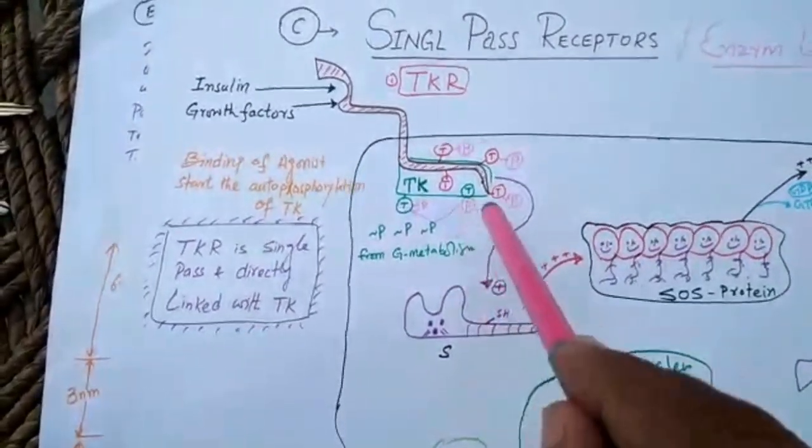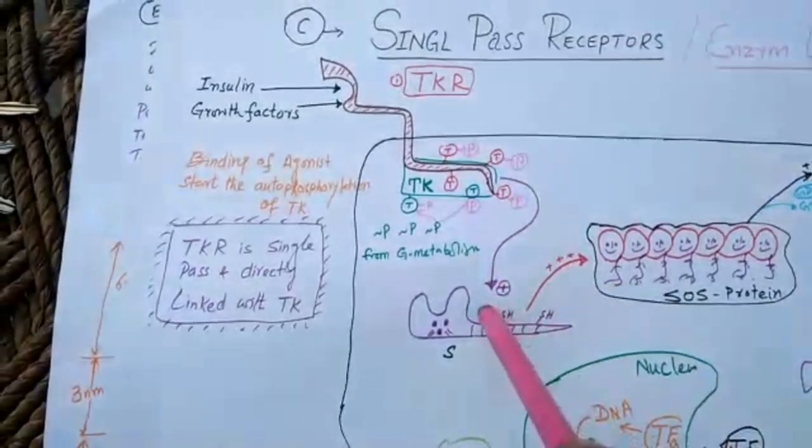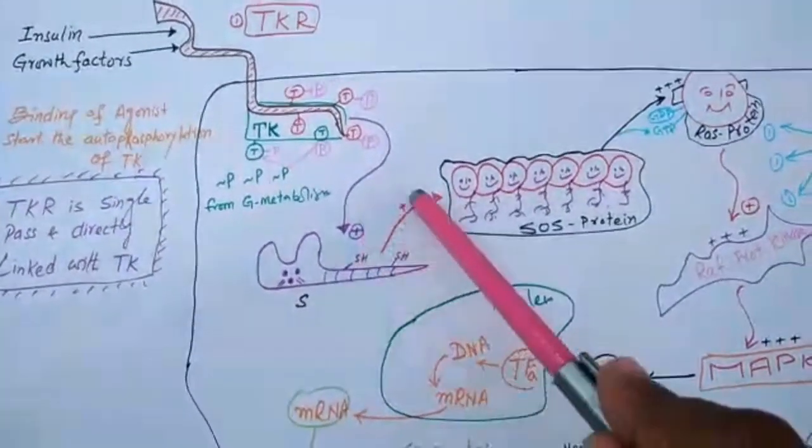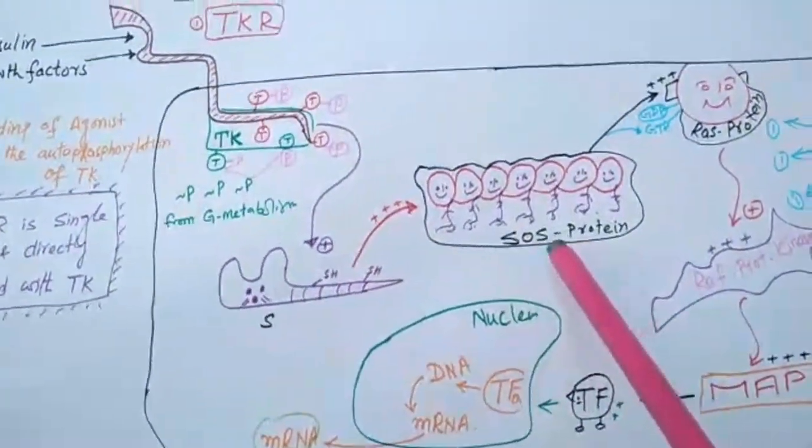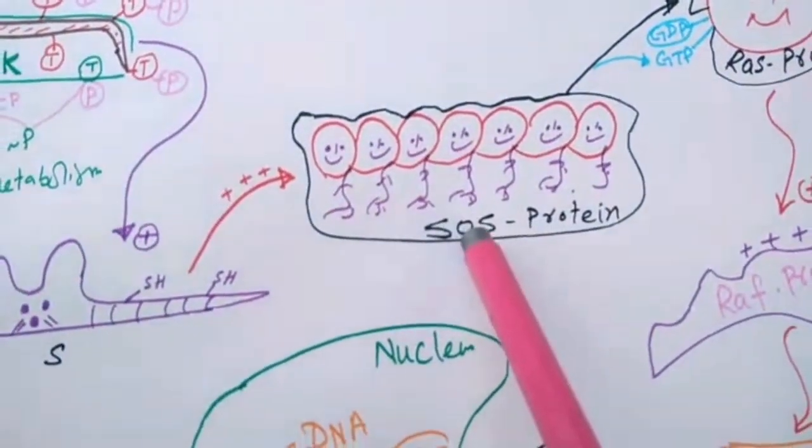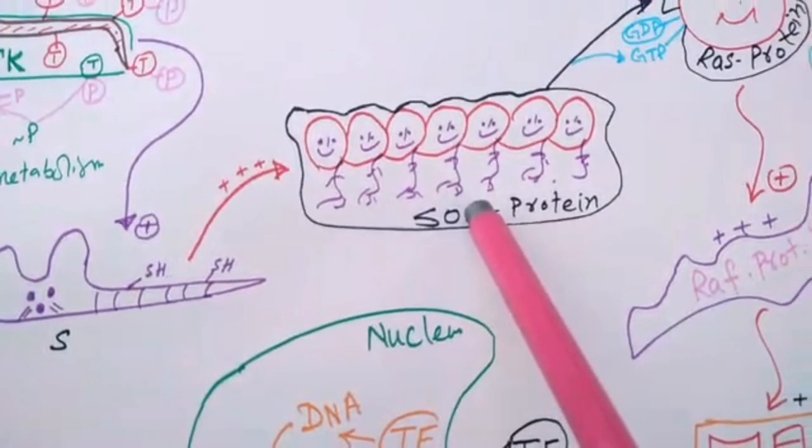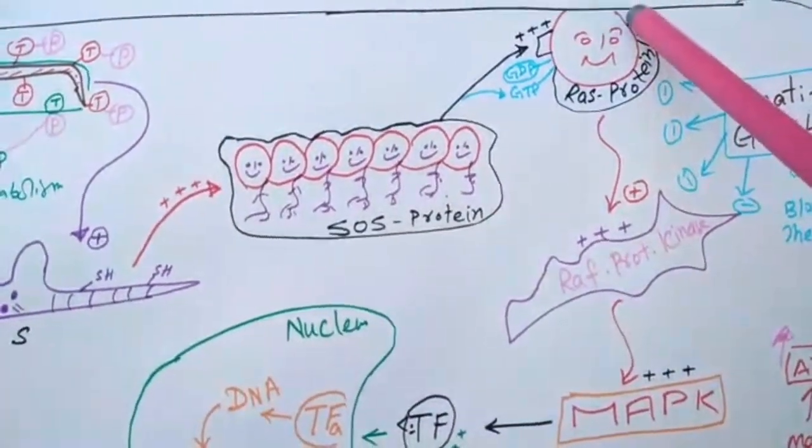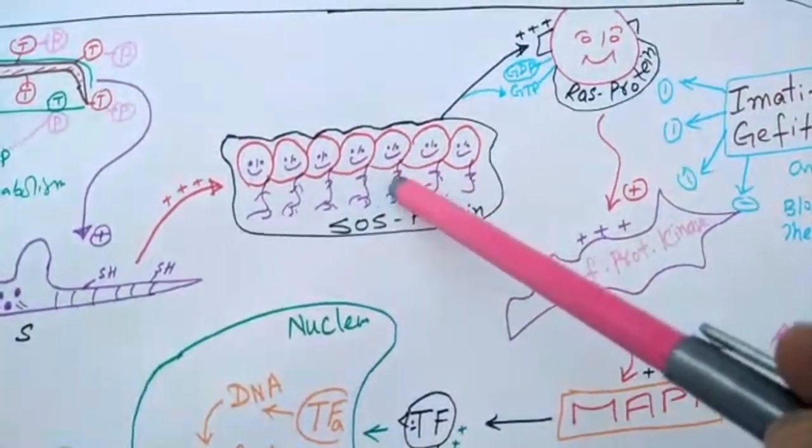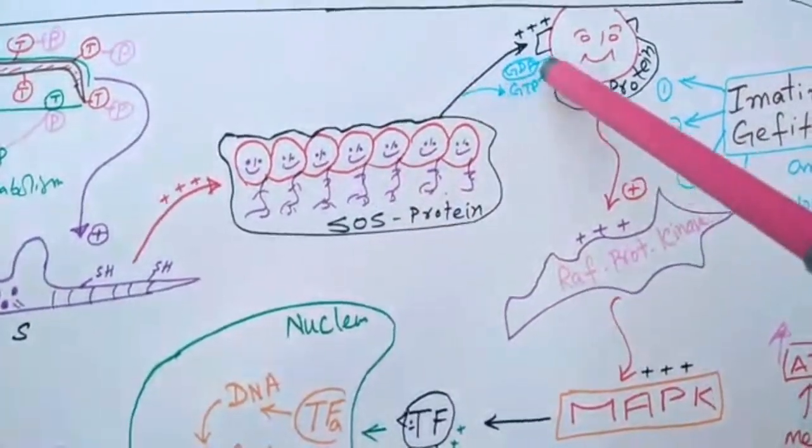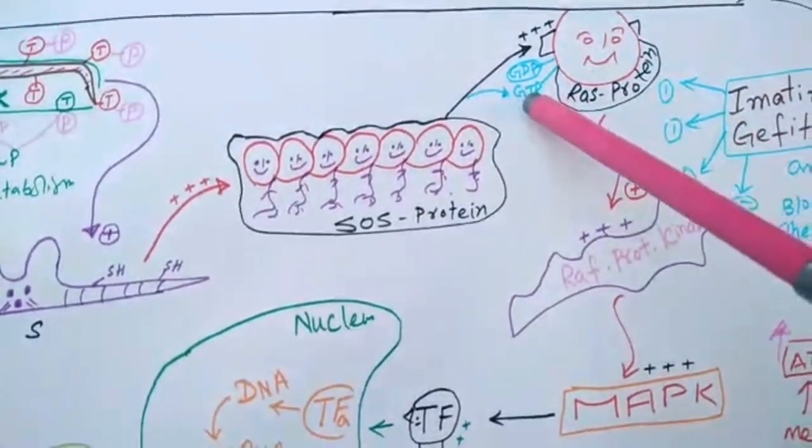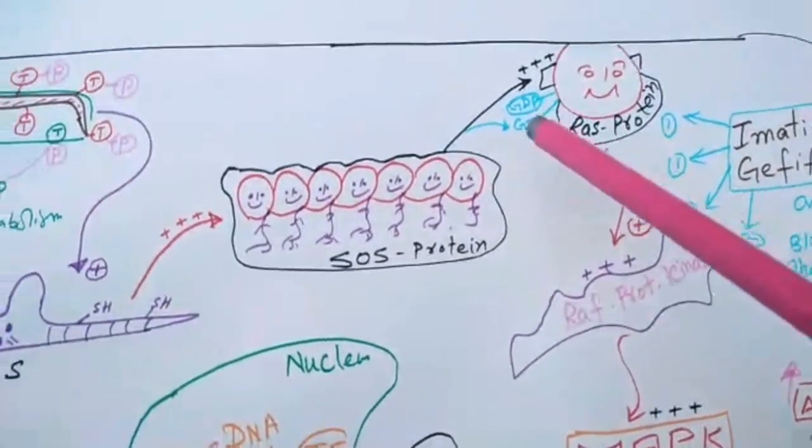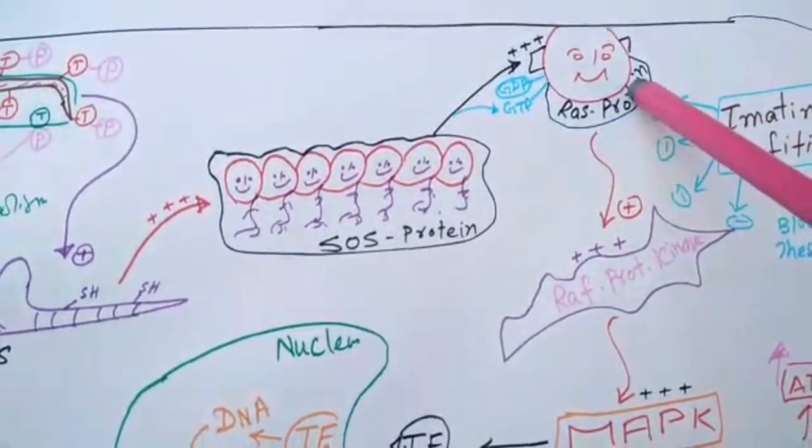This self-hydro protein then stimulates the next protein, which is known as sun-option protein. This sun-option protein then stimulates a membrane-bound protein. Actually this SOS converts the GDP of this Ras protein into GTP. Once this GDP is phosphorylated into GTP, this Ras protein is active.